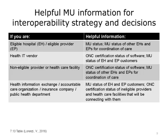Knowing about Meaningful Use, health IT policy, and ONC certification is very important for planning strategy and making decisions regarding interoperability. The table on this slide summarizes the kind of information you would need from various stakeholder perspectives to help implement or advance interoperability. In general, it is helpful to know the MU status and ONC certification status of your organization and other stakeholders in coordination of care, and then use this information in making interoperability decisions.